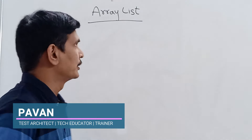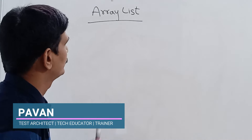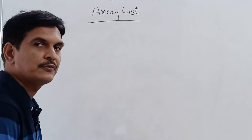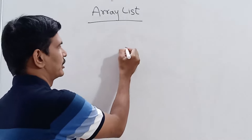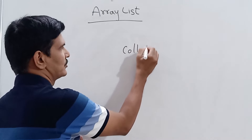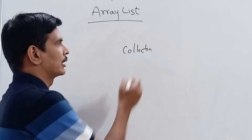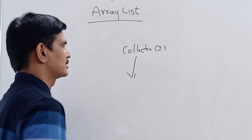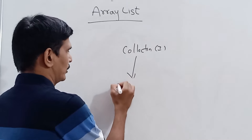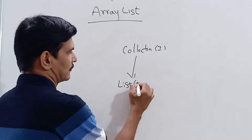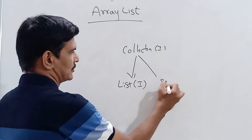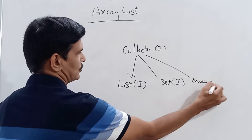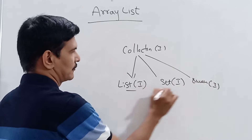Hello everyone, welcome. In today's video we are going to learn ArrayList in Java Collections. In our previous videos we have seen what is the Collection interface, which is considered as a root interface. From this interface, other child interfaces are derived — List is one child interface, Set is another, and Queue is another.